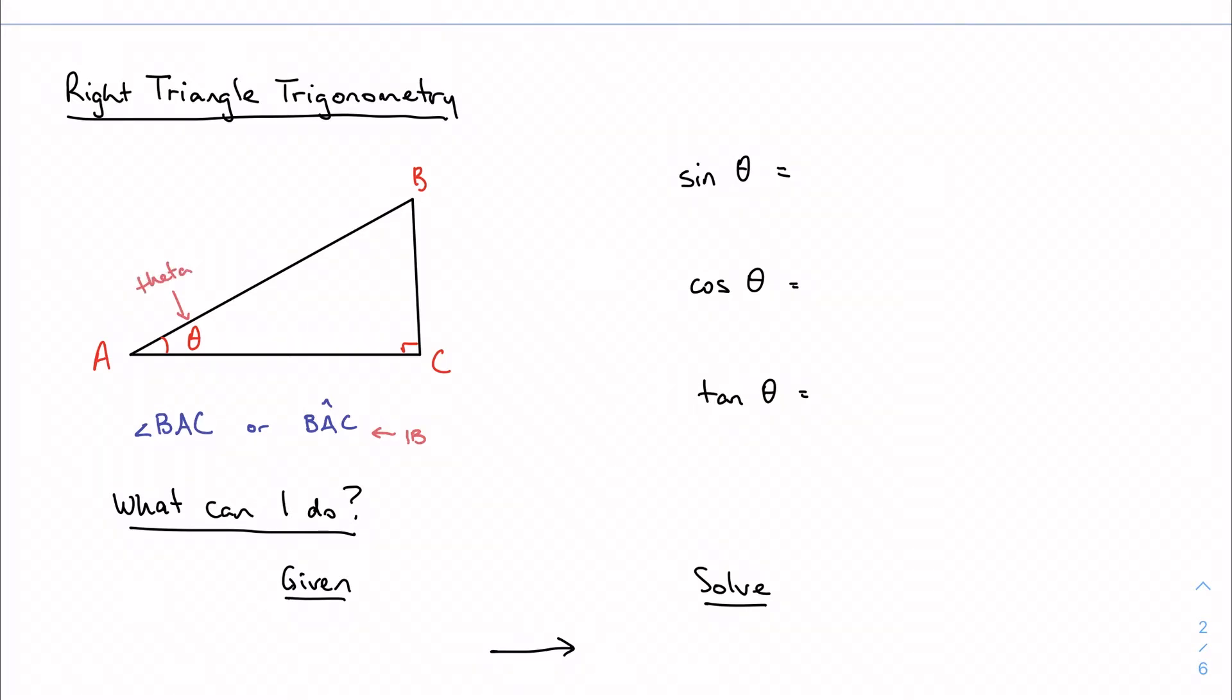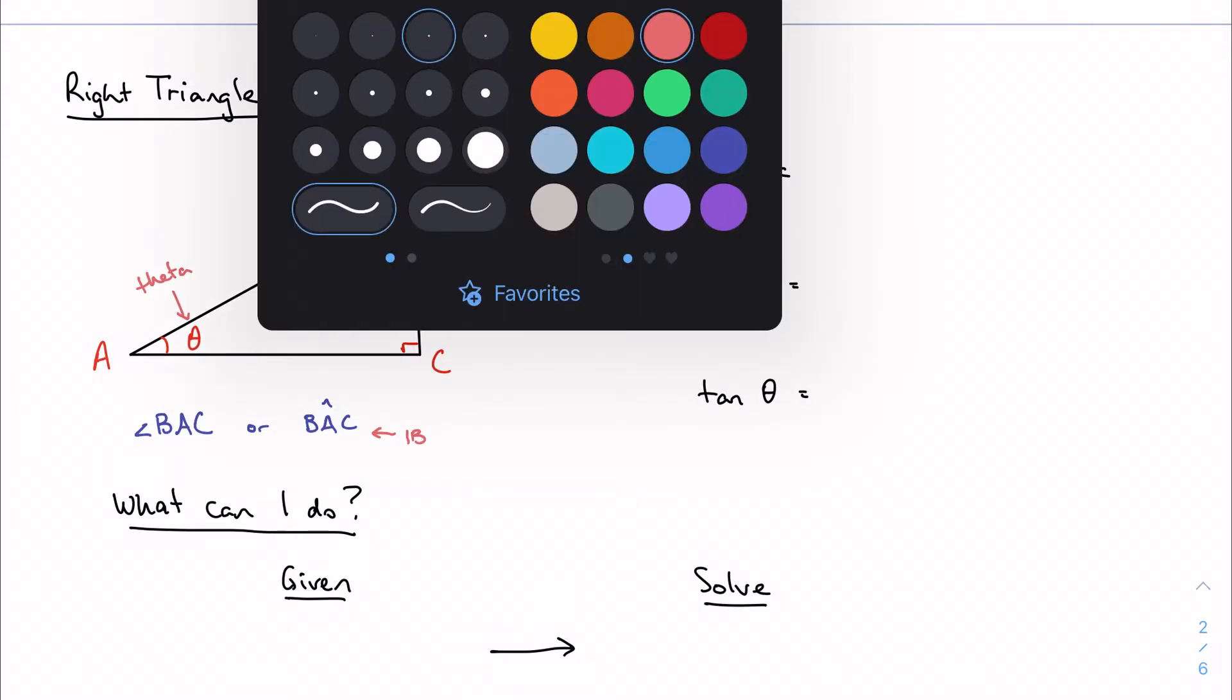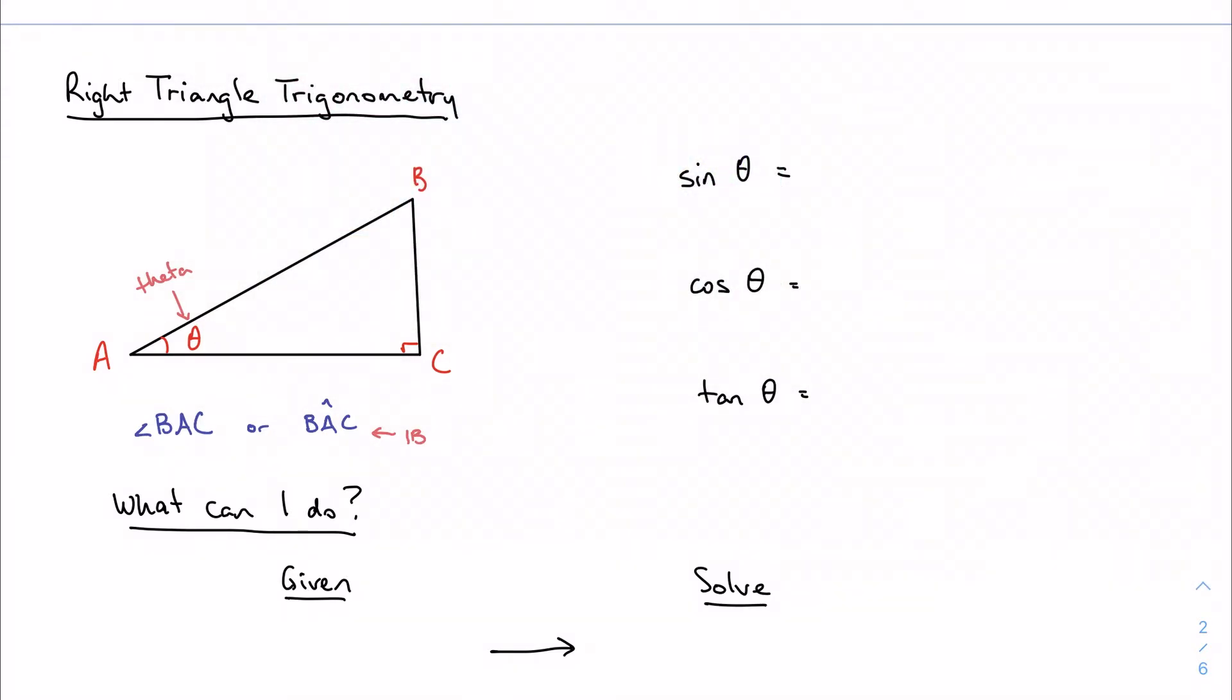And of course with our right triangle we can name our three sides relative to theta. So BC is the side opposite theta, AC is the side adjacent to theta, and AB is the hypotenuse. It's the non-perpendicular side. BC and AC are perpendicular, and then AB is the hypotenuse.